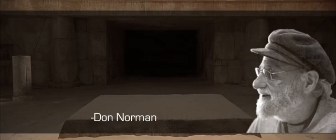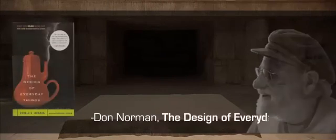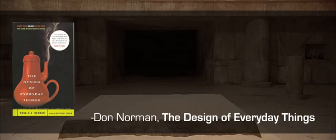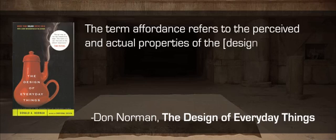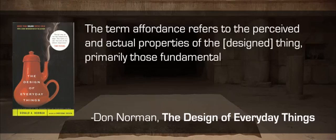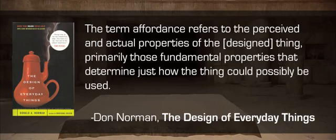Donald Norman popularized the notion of affordances as a design concept in his book, The Design of Everyday Things. Here's how he described them: the term affordance refers to the perceived and actual properties of the designed thing, primarily those fundamental properties that determine just how the thing could possibly be used.